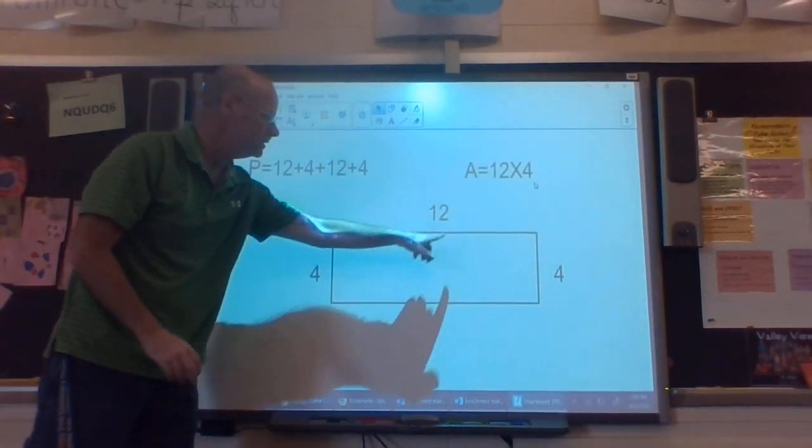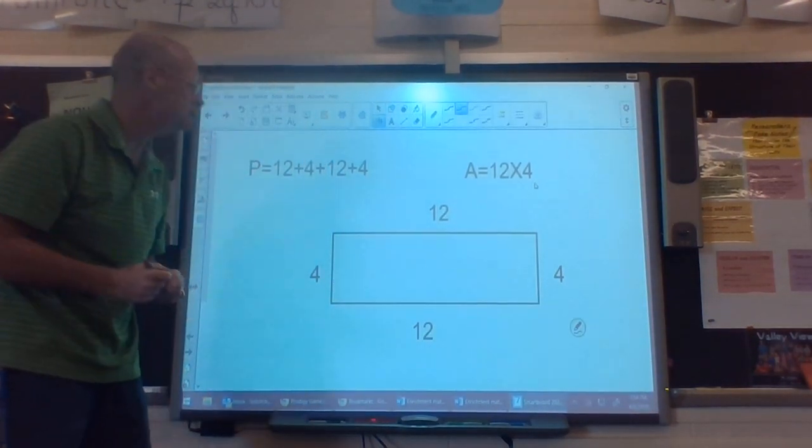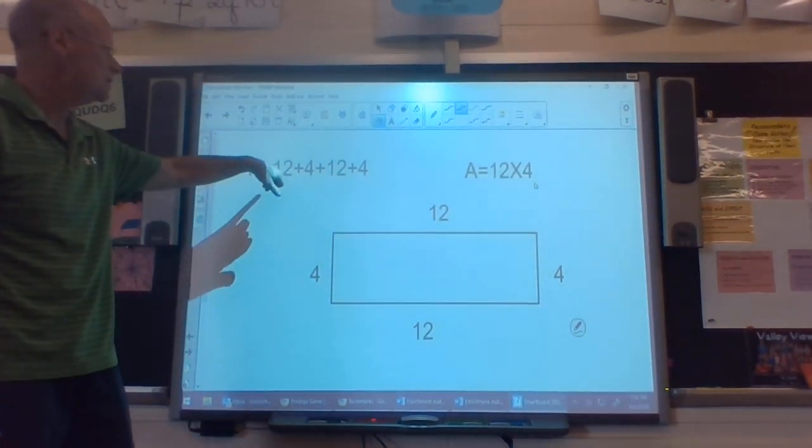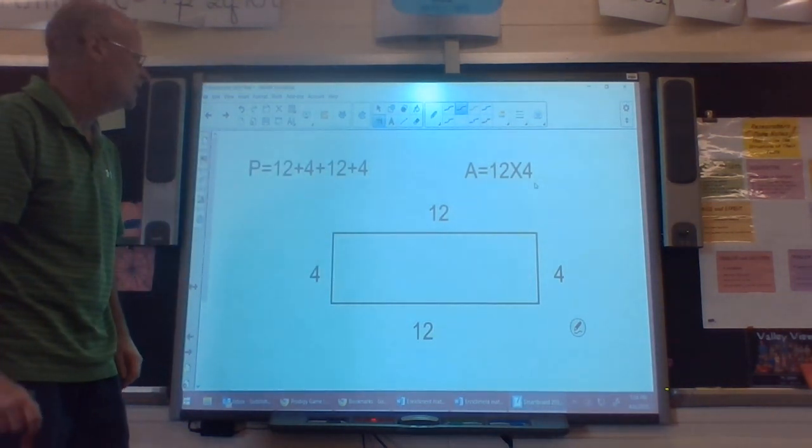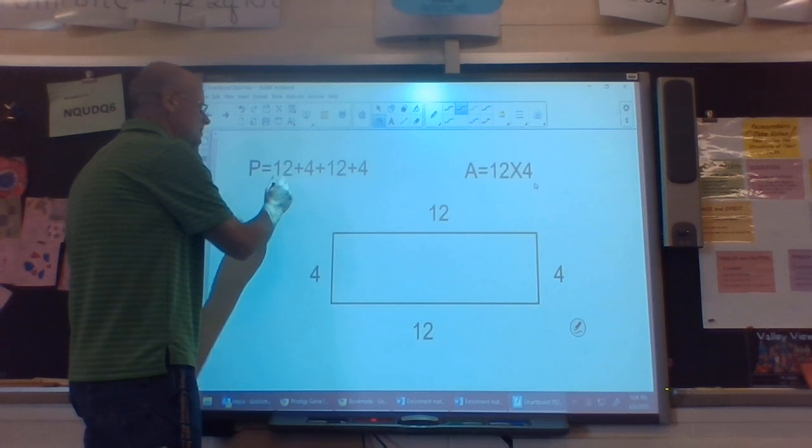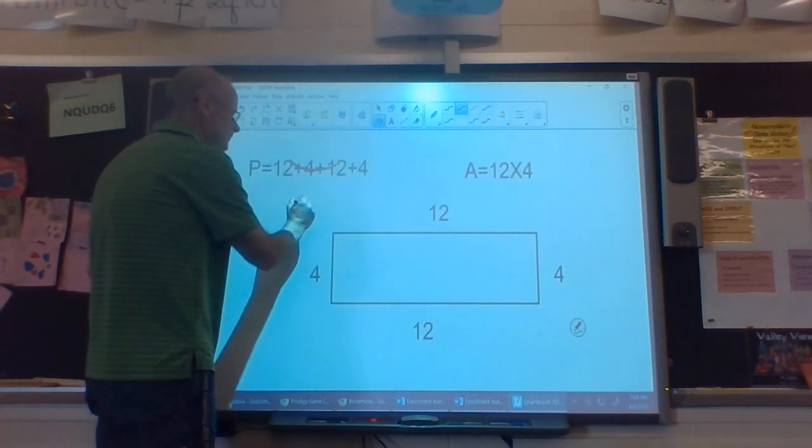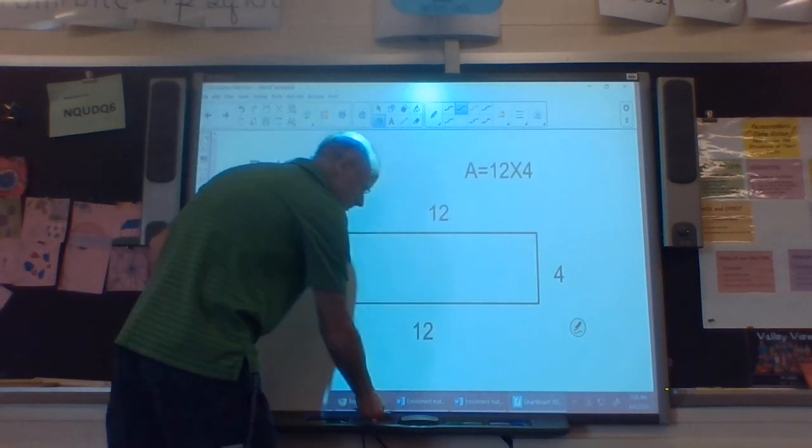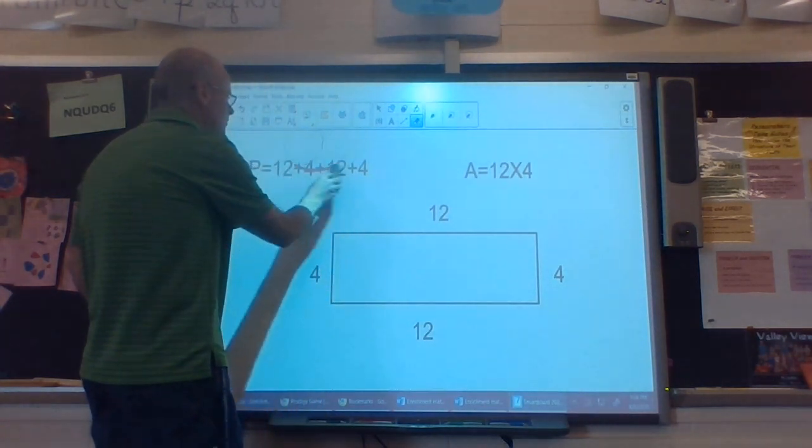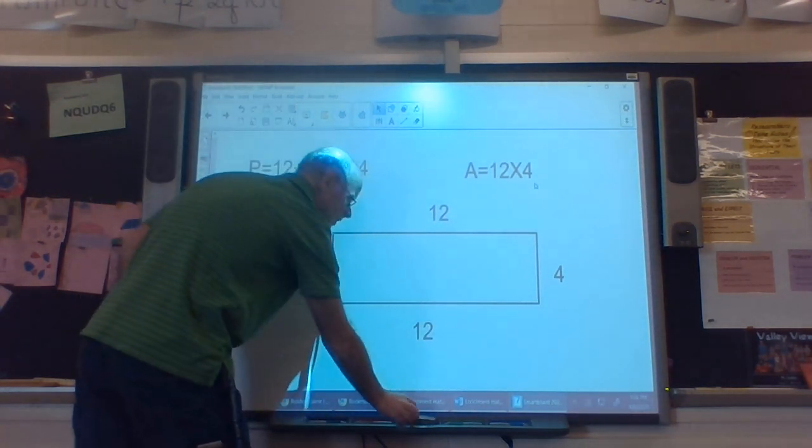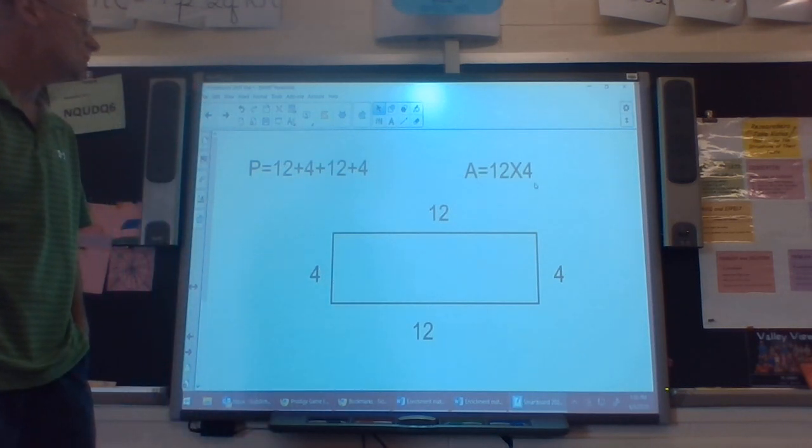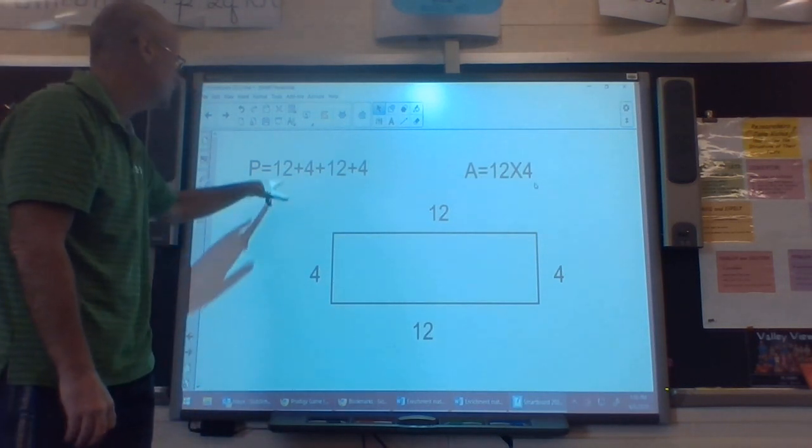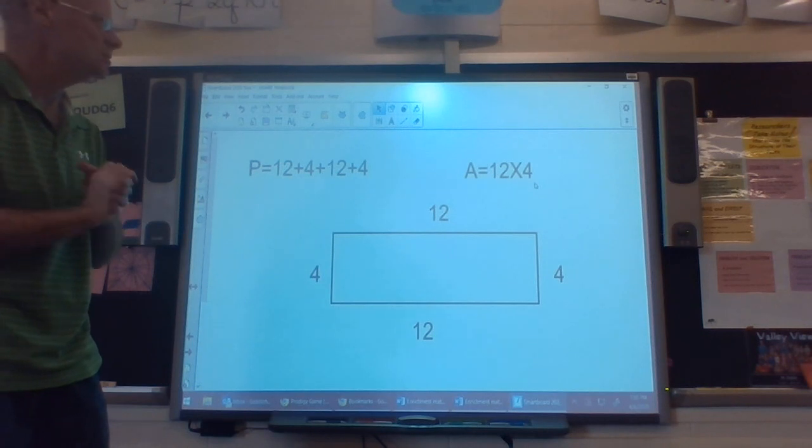I went back in and filled in the rest of my sides so I can do this easily. My perimeter is going to be 12 plus 4 plus 12 plus 4. I decided to do it this way. Two 12s are 24, and 4 plus 4 are 8. 24 and 8 are 32. So my perimeter would be 32 inches.